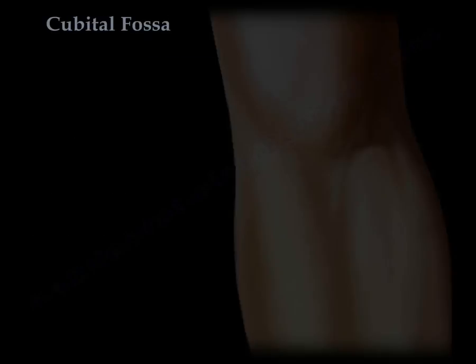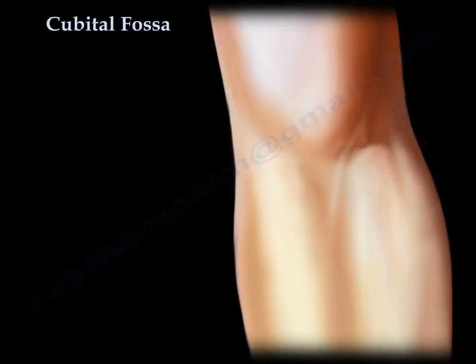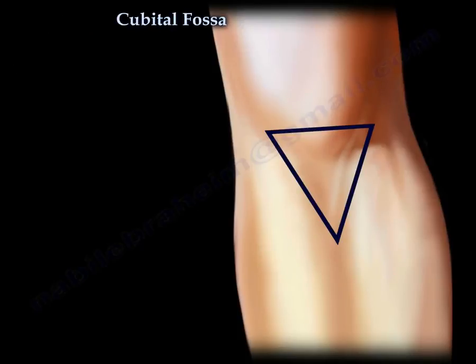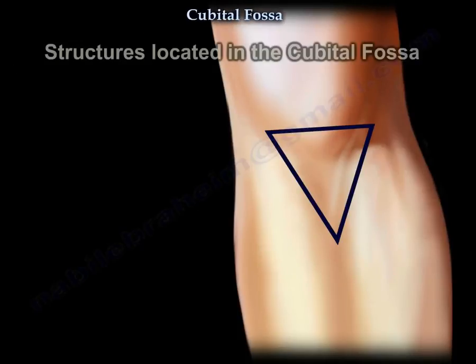The cubital fossa is a triangular depression located in front of the anterior elbow. Here are the structures located in the cubital fossa.